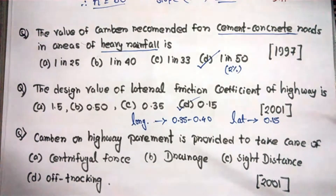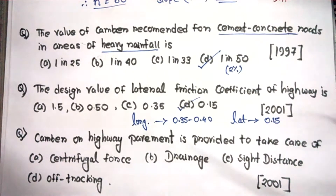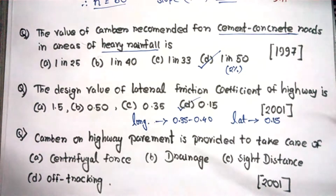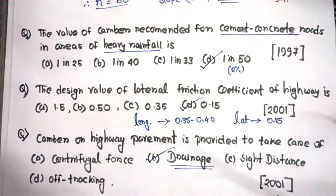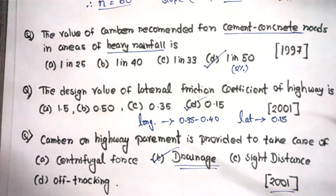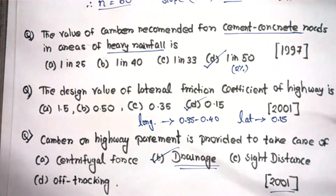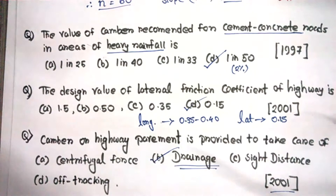The last question: the camber on highway pavement is provided to take care of what? As I told you in the previous video, the advantages of camber — camber helps to remove all rainwater from the road. So the option should be for drainage purposes. This is the right option, and this question came in 2001. In the next video, we will start sight distance theory and then lots of questions on stopping sight distance, overtaking sight distance, etc. Hope you guys liked this video, please subscribe.